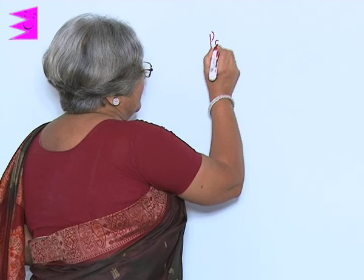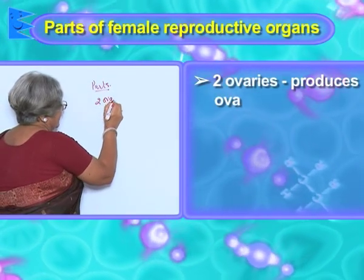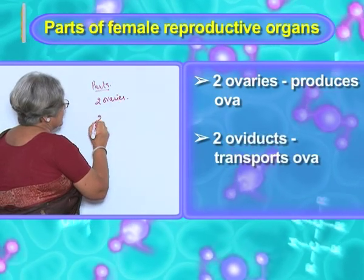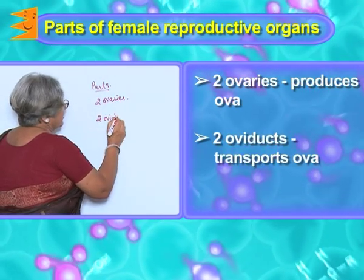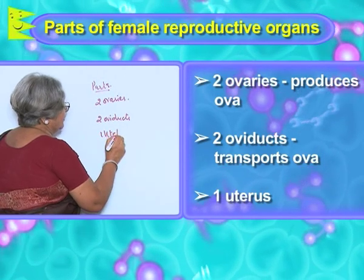Just as there is a male reproductive system, there is also a female reproductive system. The organ responsible for the production of female gametes is the ovary, and female gametes are called ova. The parts of the female reproductive system are 2 ovaries, 2 oviducts, and 1 uterus.